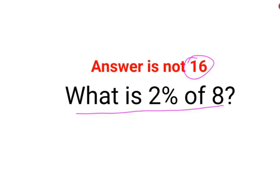See here when you want to find something you need to first convert this particular question in its mathematical form. Now how do I do it? 2% is basically 2 upon 100.